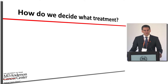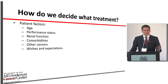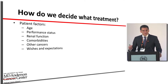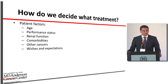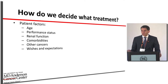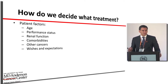The treatment decision is very individualized. Patient factors include age, performance status — whether the patient can perform activities of daily living — kidney function, comorbidities like prior strokes or heart attacks, other active cancers, and most importantly, a frank discussion about what the patient's wishes and expectations are. If cure cannot be offered, we must be honest. If palliation is what they seek, we work toward that.